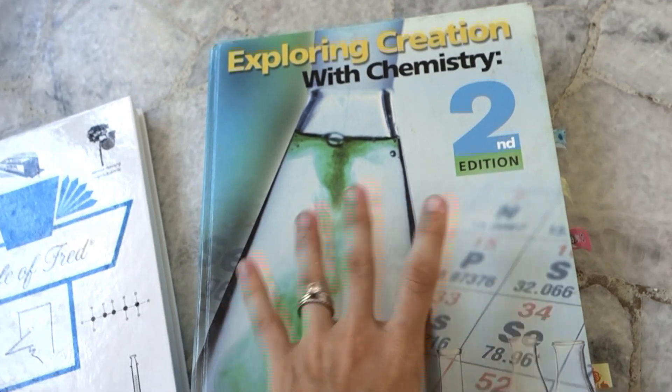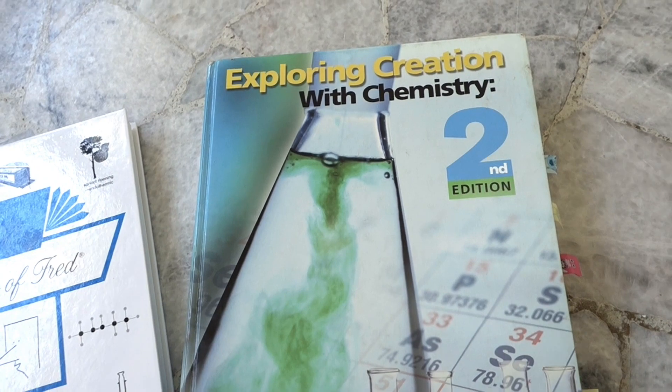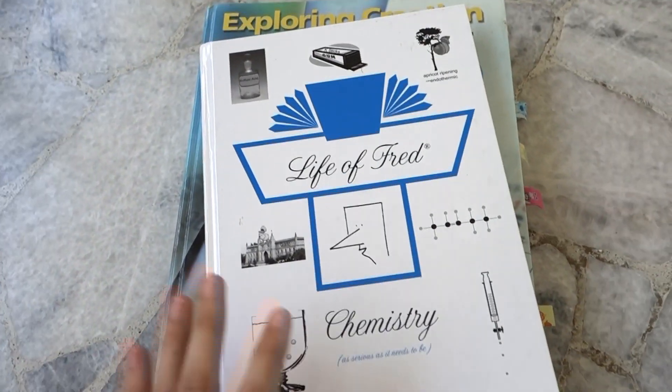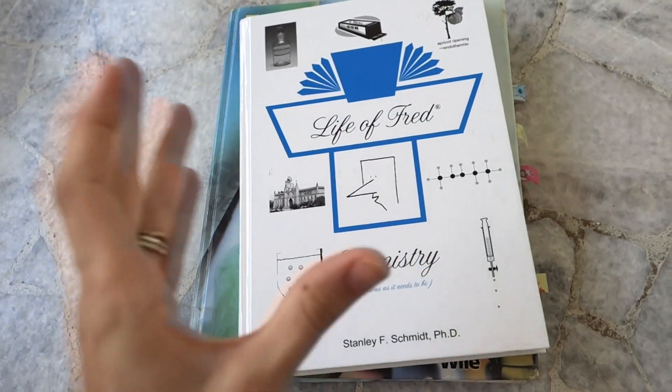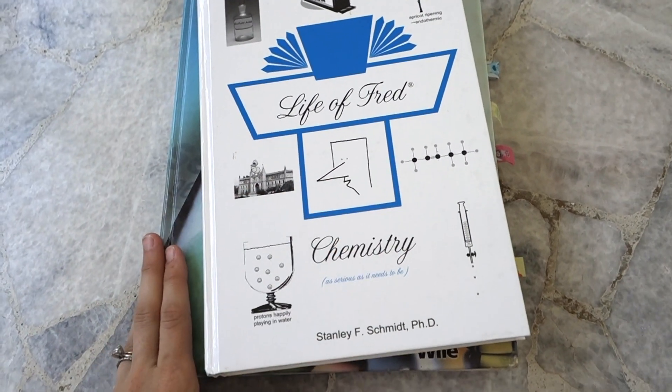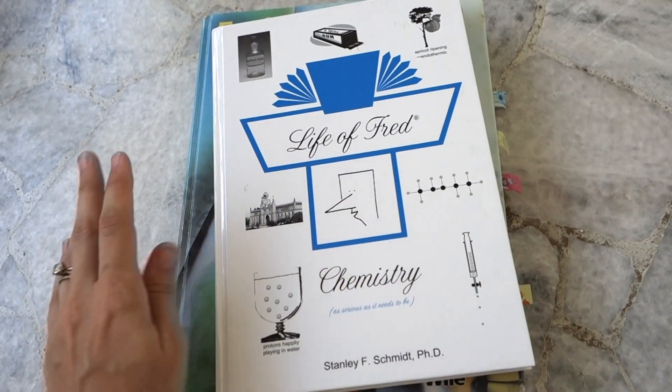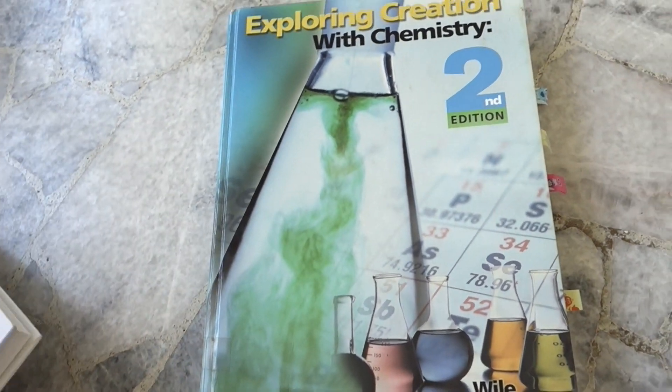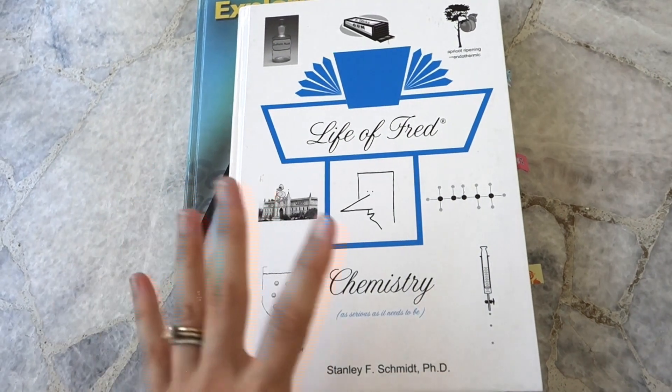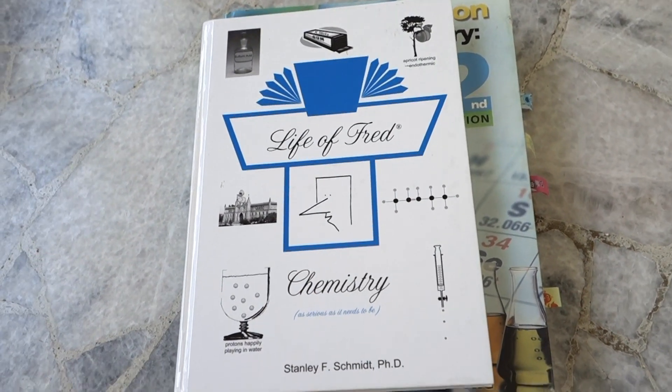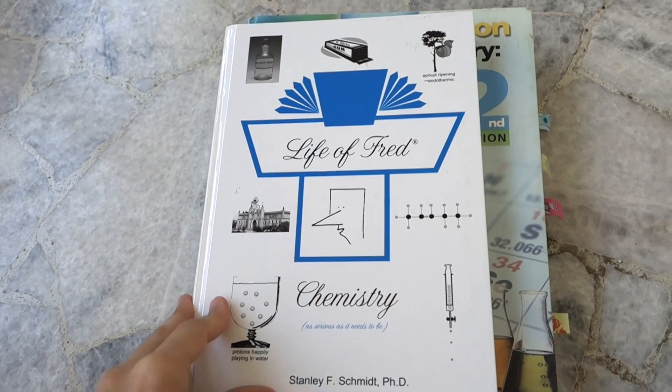So this was what we used solely for chemistry with the first five kids in my family. For kid number six and seven, we have added in this. This is not necessarily necessary. It's totally separate and different. This is life of Fred chemistry. And I wouldn't say this first book can be used as a just plain introductory chemistry course. This one, I don't think could just be used independently by a student to introduce themselves to chemistry on their own.